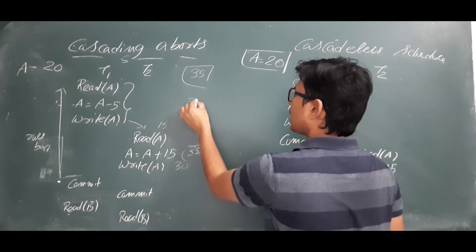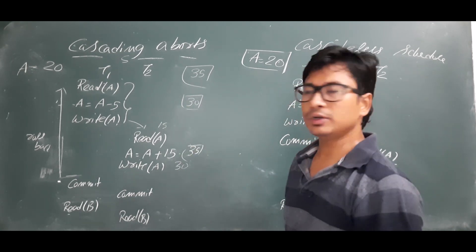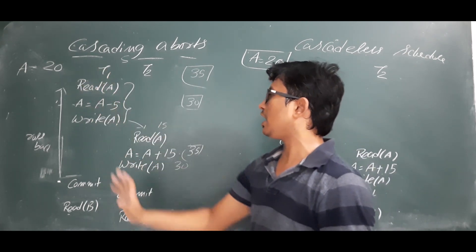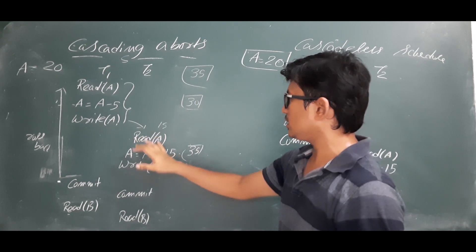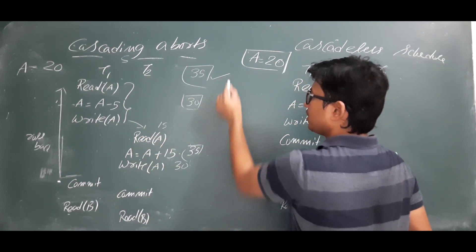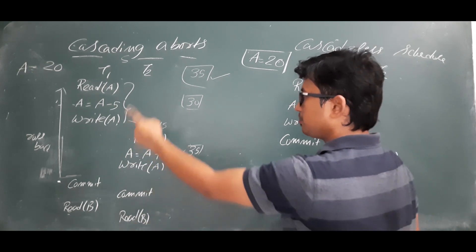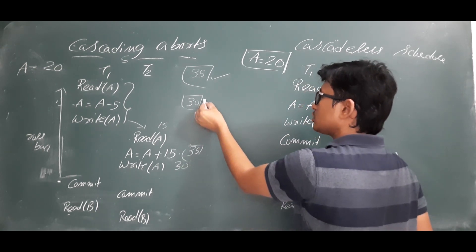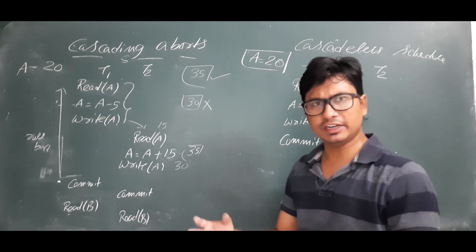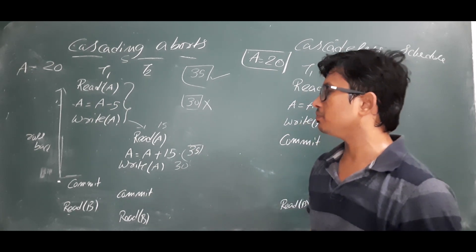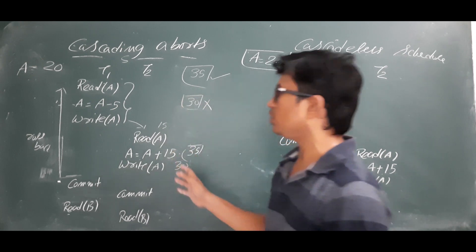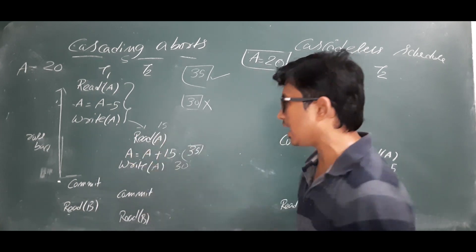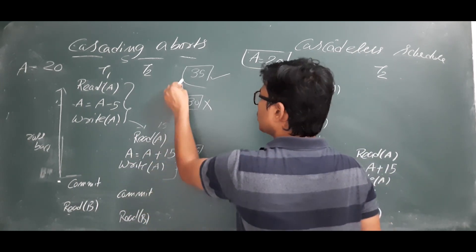If there was no transaction one and transaction two read directly from the database, it would have updated A as 35. But because transaction two read the value written by transaction one — an uncommitted value — it is updating incorrectly as 30. So this is clearly a problem. To avoid this, since transaction one has aborted or rolled back, transaction two also should roll back.